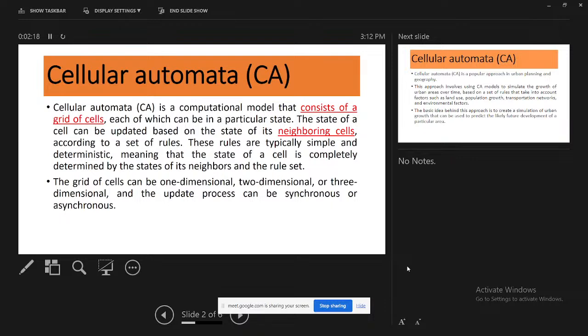The grid of cells can be one-dimensional, two-dimensional, or three-dimensional, and the update process can be synchronous or asynchronous. In this case, we're mainly working with two-dimensional cells for our land use land cover classification pixel values - we only get height and width.